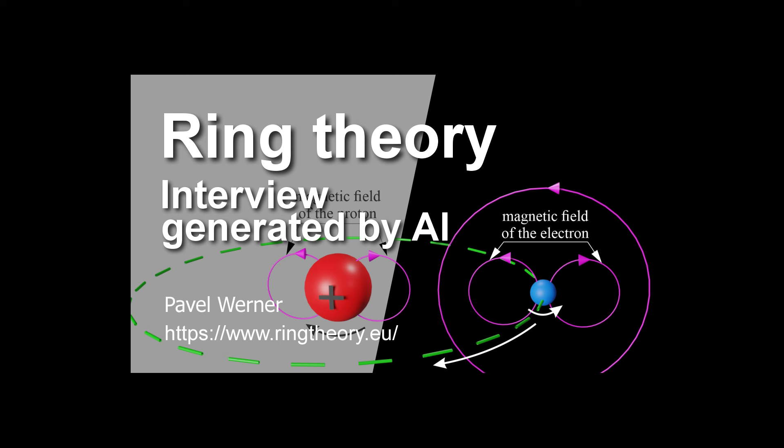That would be incredible. Clean, nearly limitless energy from a process that mimics the stars themselves. It's like something straight out of science fiction. It is. And that's just the beginning. Ring theory could also have profound implications for our understanding of how elements form in stars, the behavior of black holes, even the very nature of dark matter and dark energy, those cosmic mysteries that make up the vast majority of the universe, but that we still don't understand. Okay, now you're just showing off. But seriously, it's incredible to think that this one idea, this one shift in perspective about the structure of the atom, could potentially unlock so many mysteries of the universe.